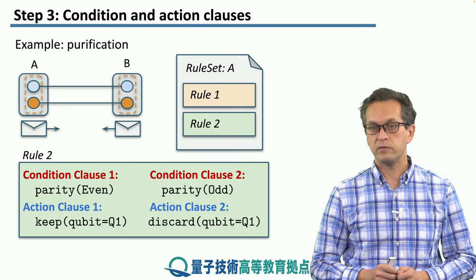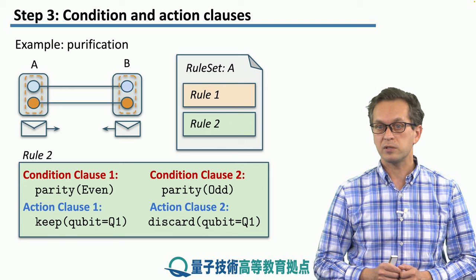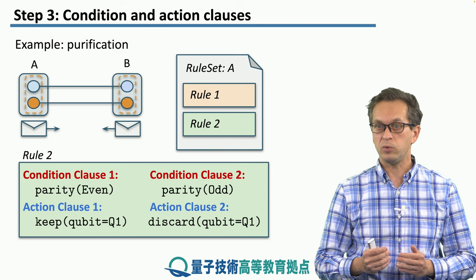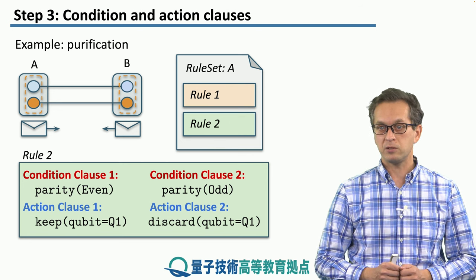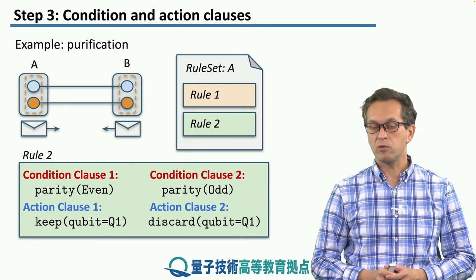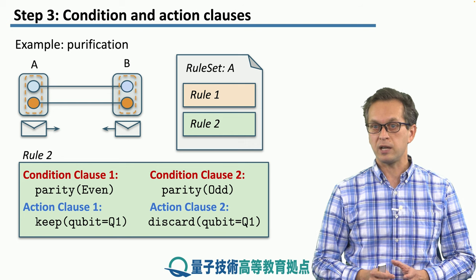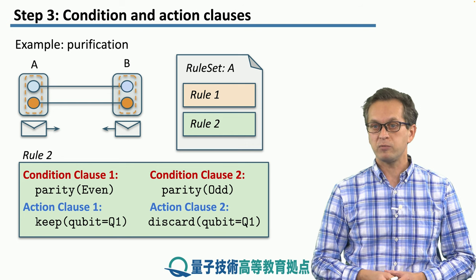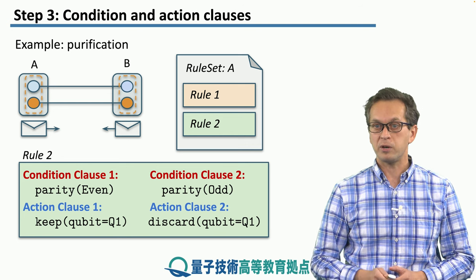This way, you can see how to achieve decentralized, autonomous, but coordinated action between the nodes with minimal exchange of classical messages. That about covers the basics of rules and rule sets, and condition and action clauses. In the next step, we're going to put everything together and talk about connection setup.